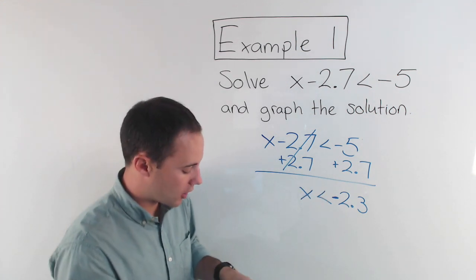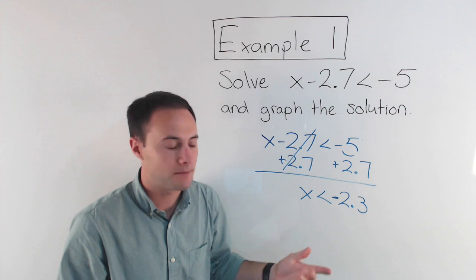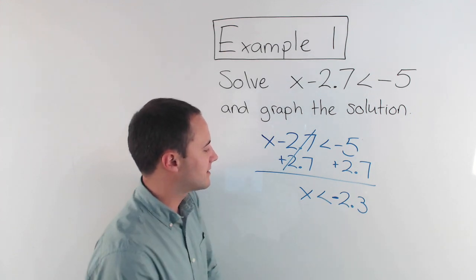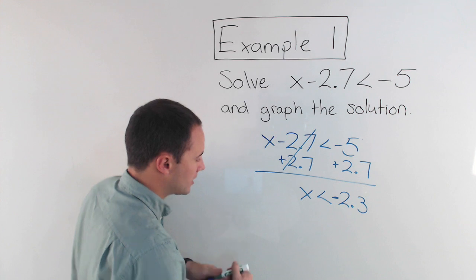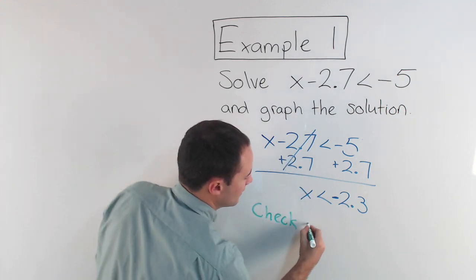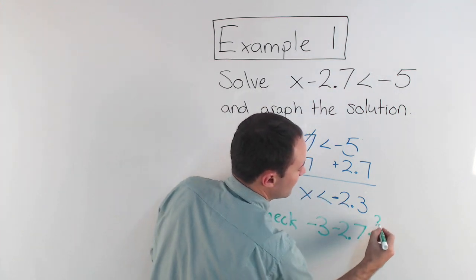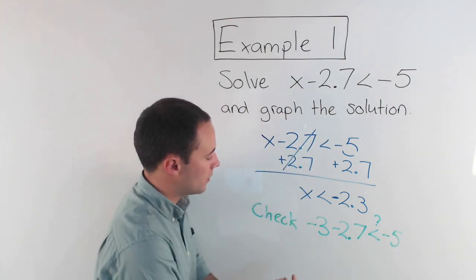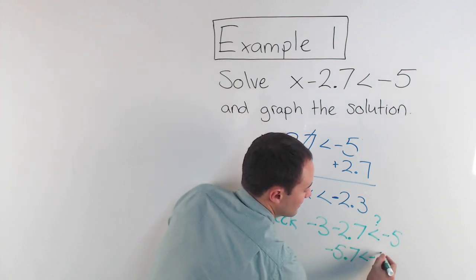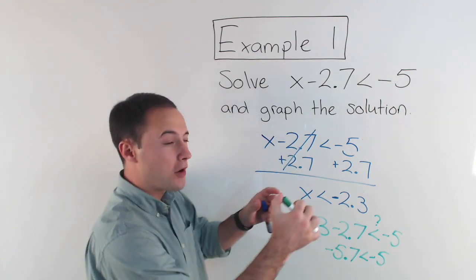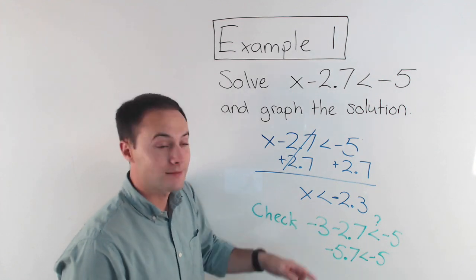If I want to check that, all I have to do is pick a number for x that's less than negative 2.3 and substitute it in. So maybe I'll say, okay, well, what if x is negative 3? Negative 3 is less than negative 2.3. So if I substitute that in for my check, I would have negative 3 minus 2.7, and the question is, this is our check, less than negative 5. Well, negative 3 minus 2.7 is negative 5.7, which in fact is less than negative 5. It's farther to the left on the number line, farther negative. So it is less than negative 5, which means that's great. We're good.